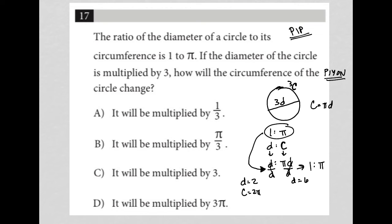Now, if the diameter of a circle is 6, the circumference of that circle would be 6π. Why is that the case? Because the circumference is π times d.